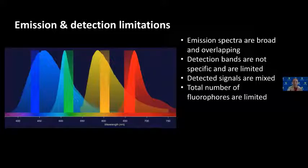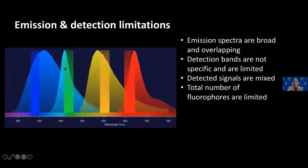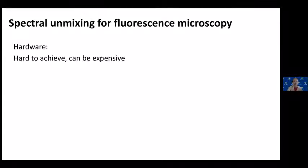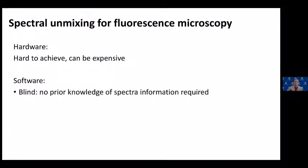For a standard multi-photon microscope, people can usually detect two colors; my system has four detectors so we can typically do three or four colors simultaneously. However, even with only three or four colors we have what's called channel bleed-through, where under one detection channel we can detect multiple signals. On the other side, biologists always want to see more colors simultaneously, but hardware-wise we have limitations. There are other hardware designs that can push the limit by one or two more fluorophores, but those designs are always very expensive.